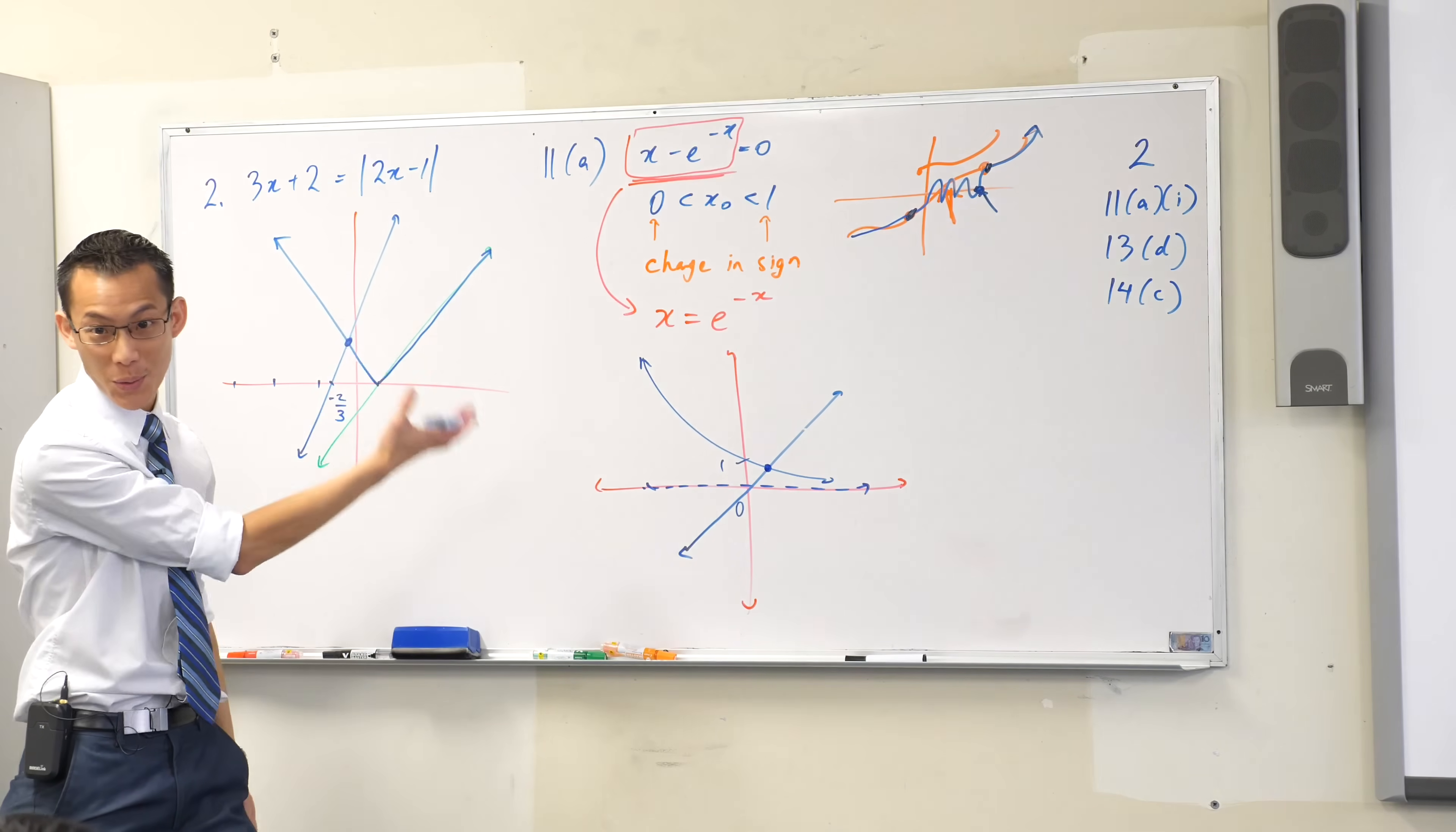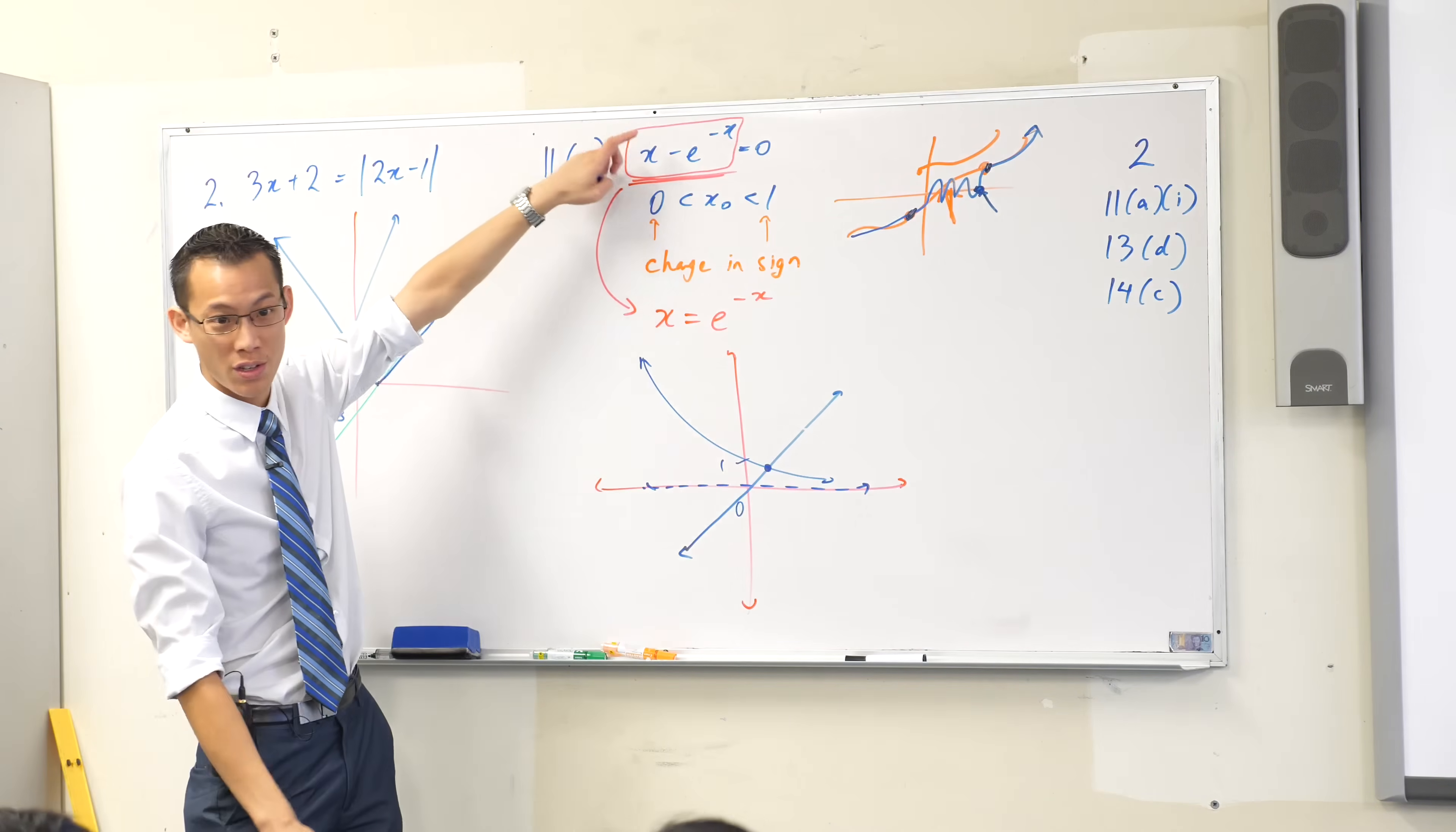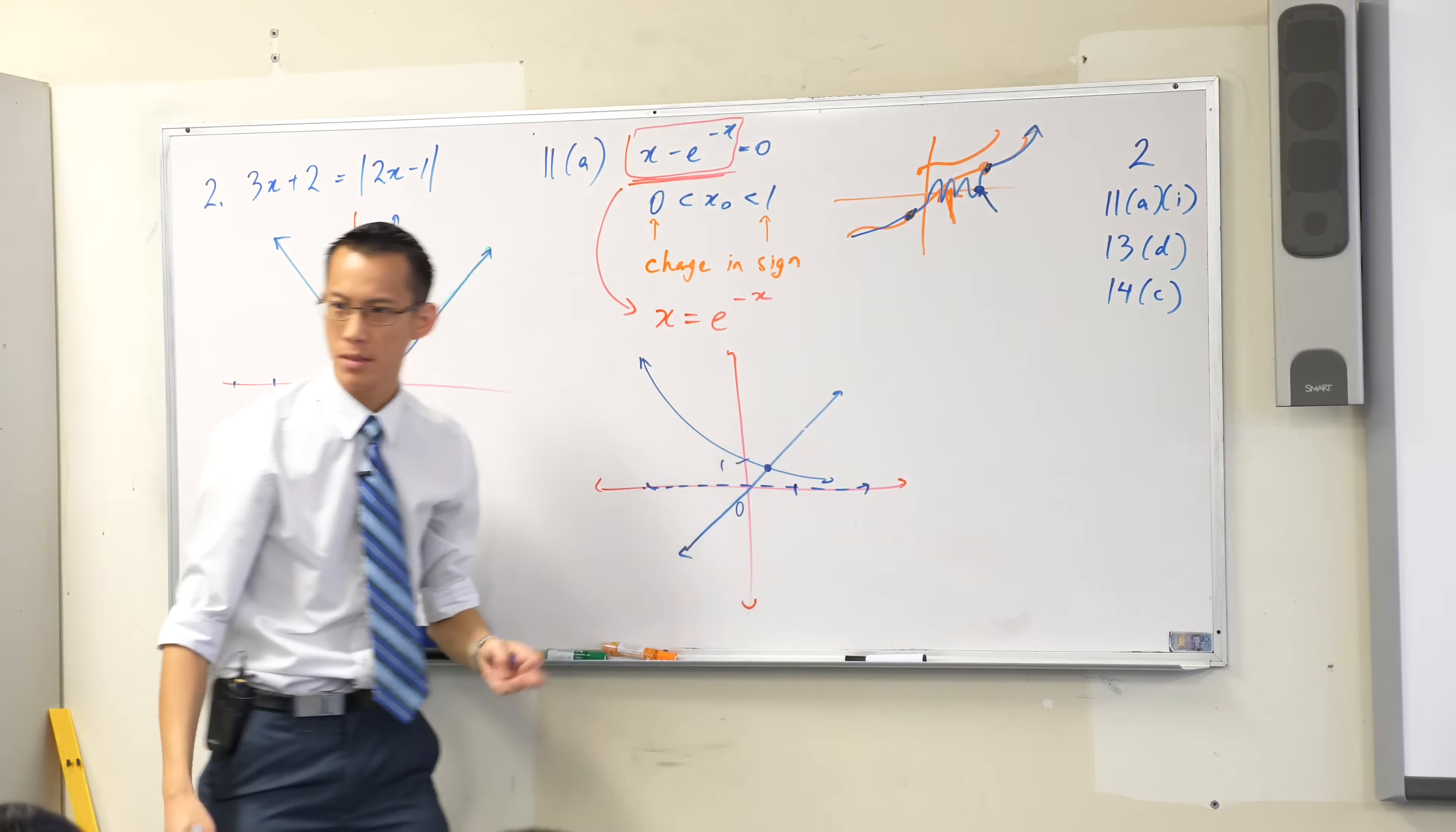There is one and only one solution. That is totally valid working. Everything on that graph is there that demonstrates what I need, that there's only one solution. And then I would do my test to show that the one solution happens between here and here, zero and one. Does that make sense?